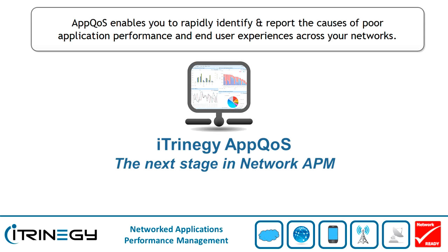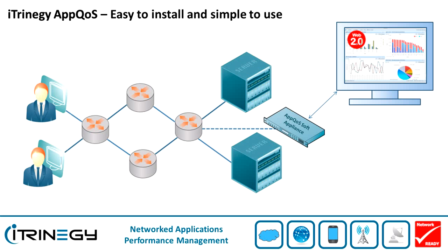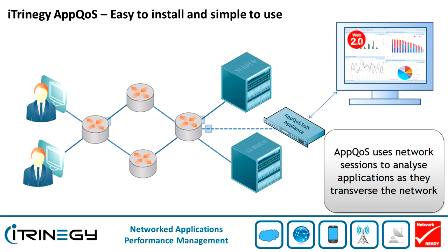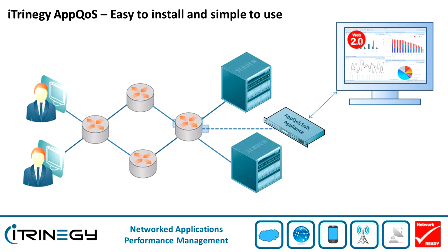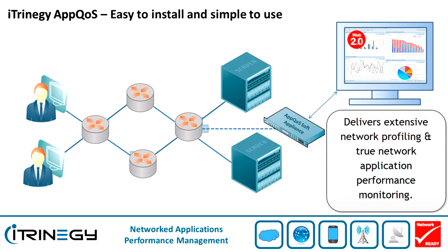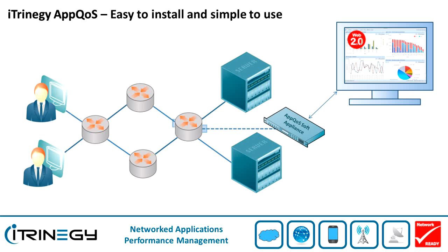APCOS enables you to rapidly identify and report the causes of poor application performance and end-user experiences across your networks. APCOS, our network APM technology, uses network sessions to analyse the applications as they transverse the network. This information is then used to provide extensive network profiling and true network application performance monitoring.